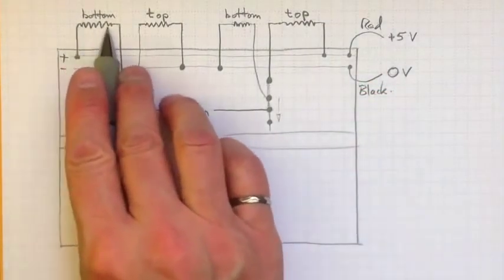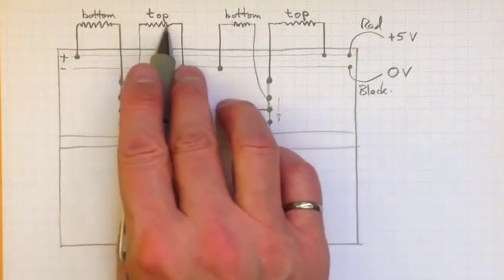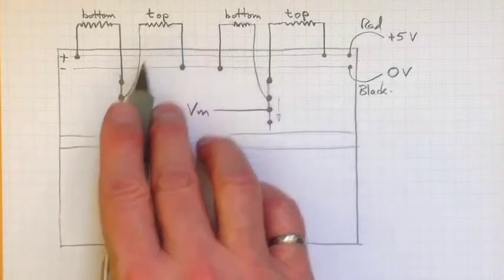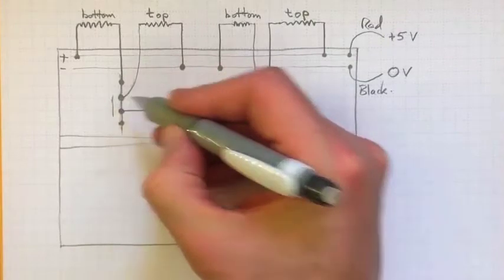And if I look over here, this resistance is going down and that resistance is going up, so this voltage is moving up a little bit from the 2.5 volts that it is nominally.